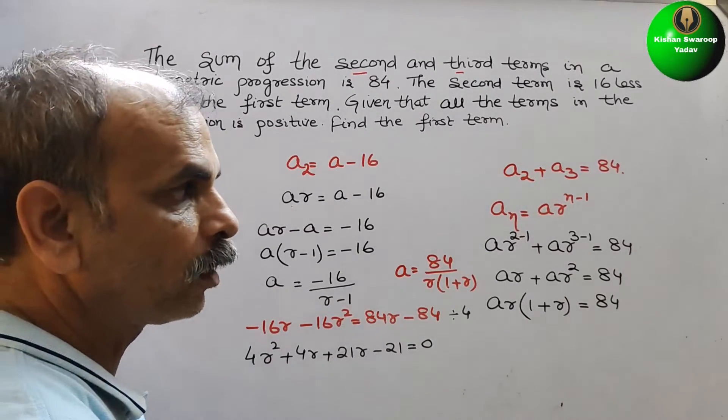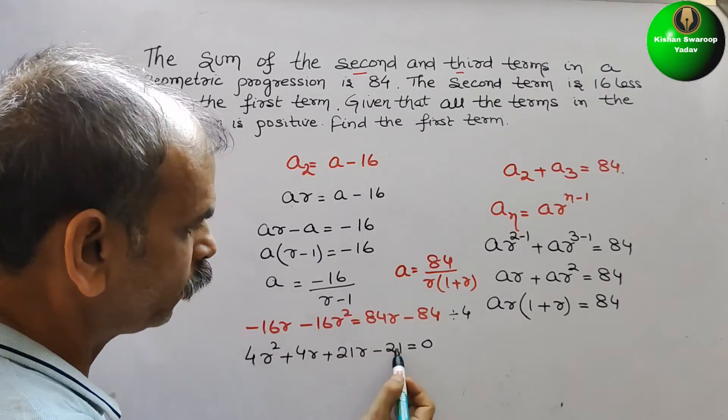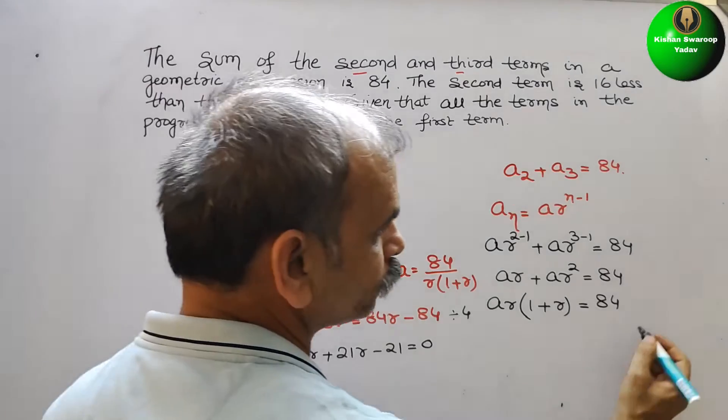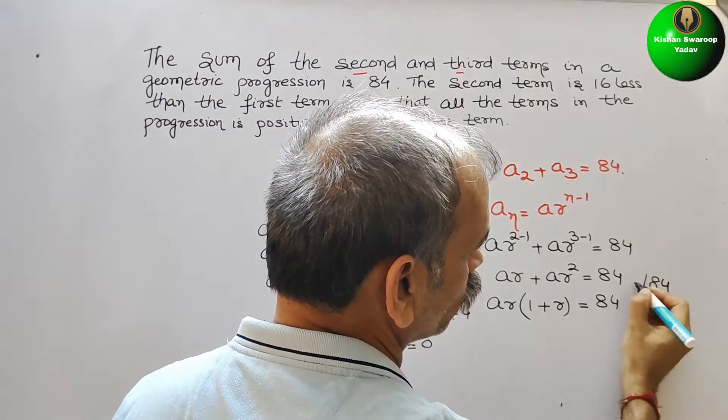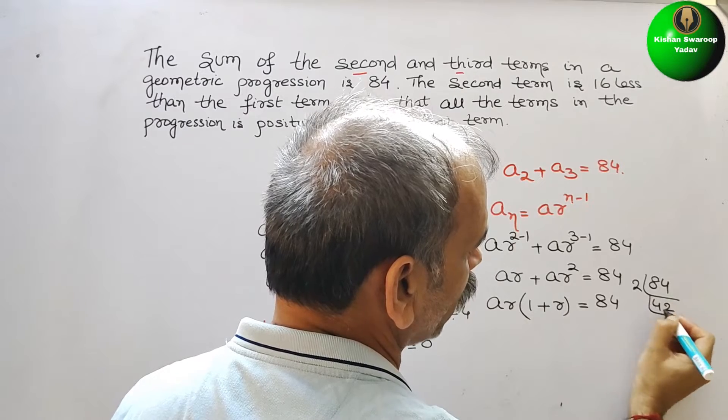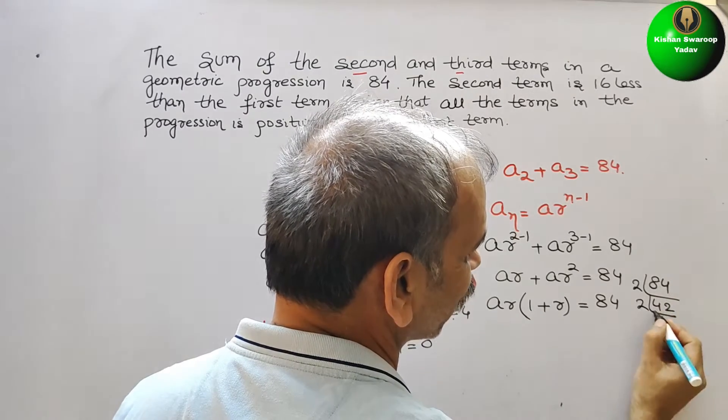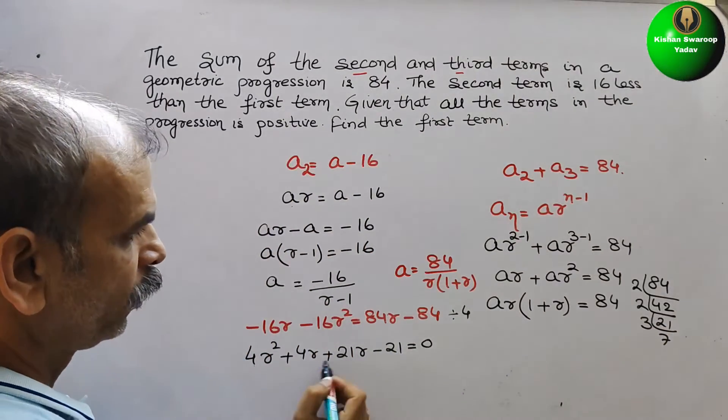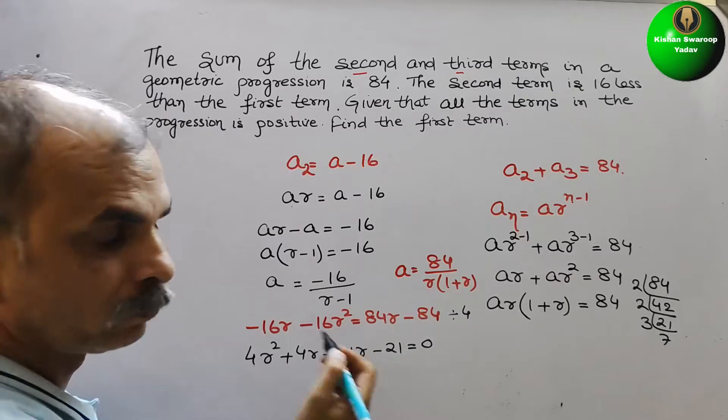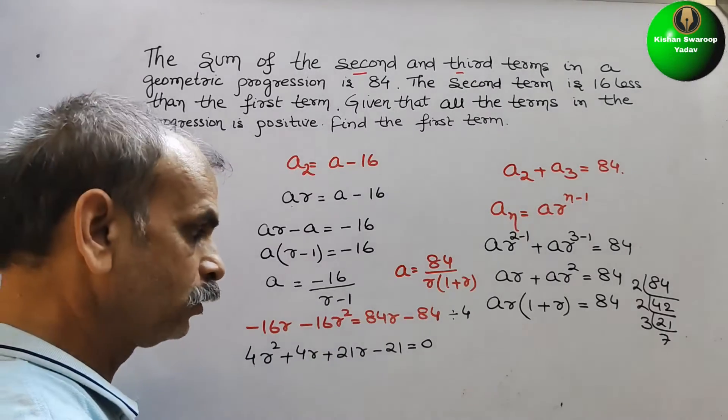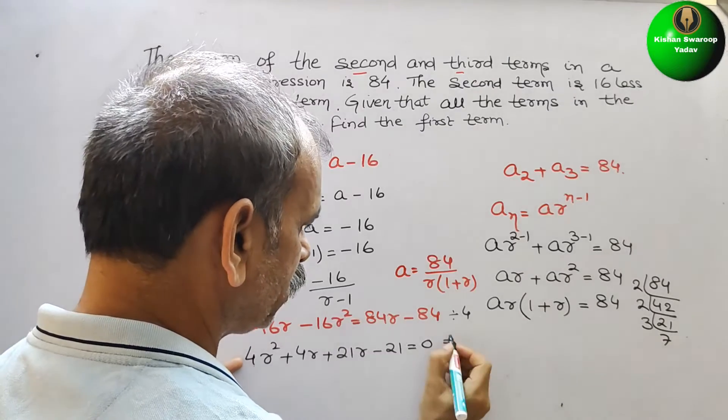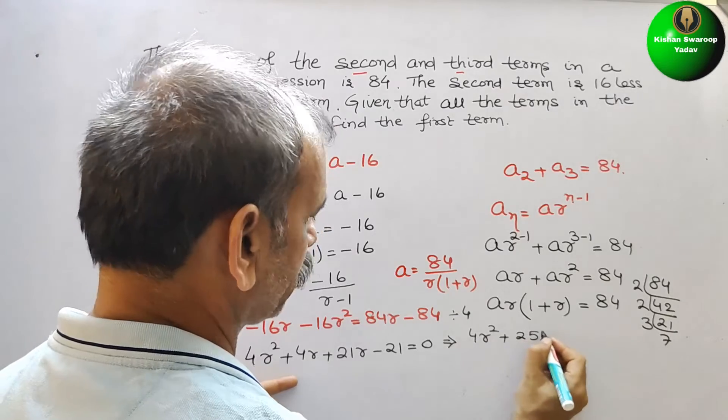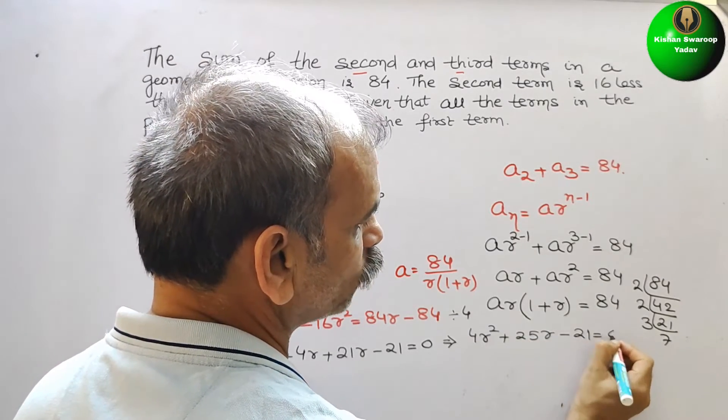Now we will go for middle term splitting. So now you can see 4 into 21 is 84. So just we will go for the factors. 84 will be 2, 42, again 2, 21, 3, 7. Now we have to make them 25. You can see this is nothing but what? 4r square plus 25r minus 21 that is equal to 0.